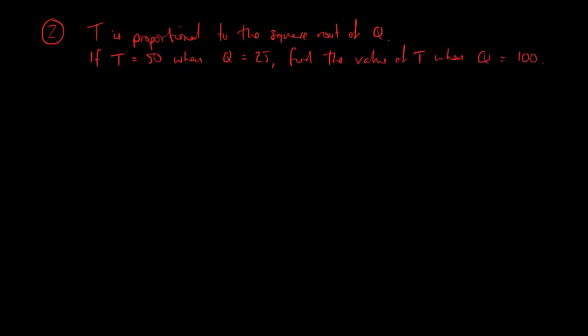So we don't know what t and q represent in this question, but it doesn't matter. We know that there's a proportionality relationship and t is proportional to the square root of q. So I can write t is equal to k times, well, the square root of q.